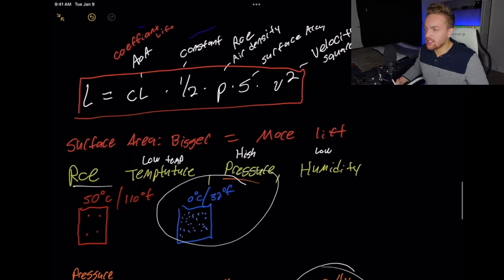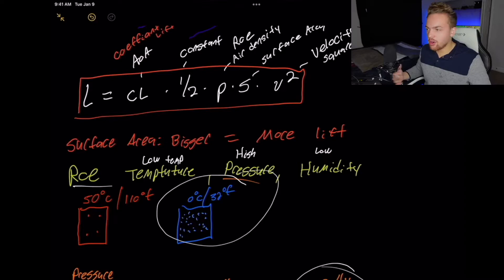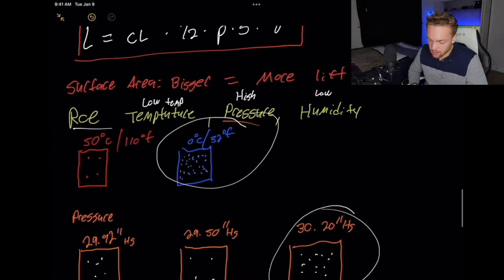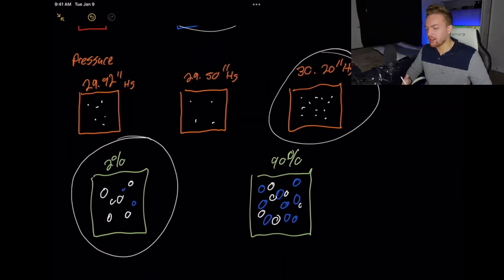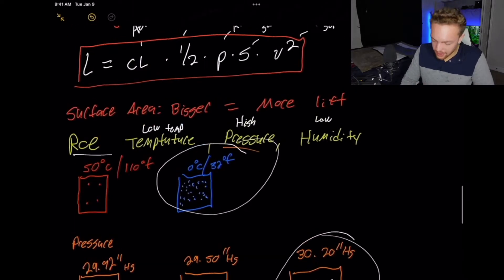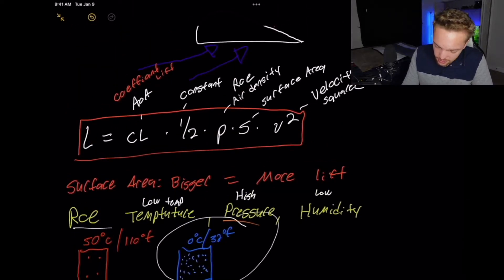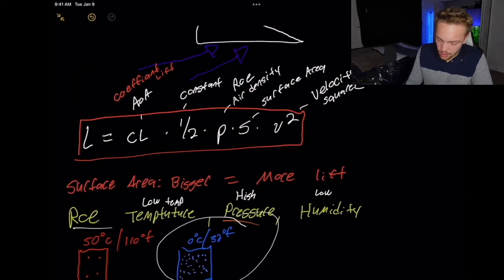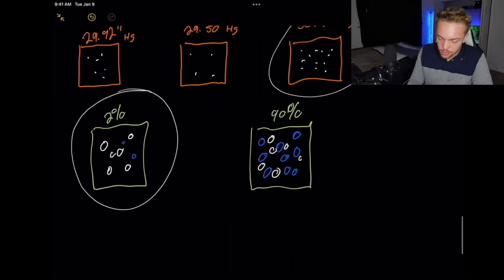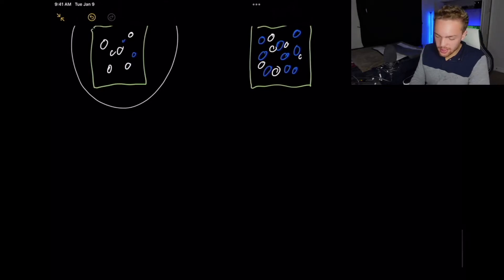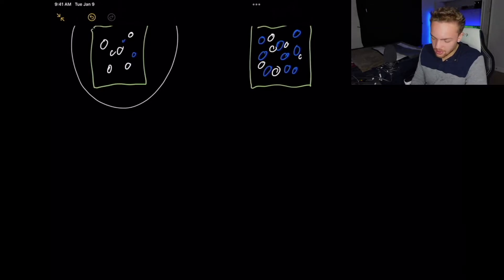So we've talked about surface area — the larger the surface area, the more lift you're producing. Then rho is air density: the more dense the air, the better. So cold, high pressure, low humidity — great. Flying in the winter is prime. Moving on — we've talked about surface area and rho. The next factor we're going to talk about is the coefficient of lift, and I love talking about it.